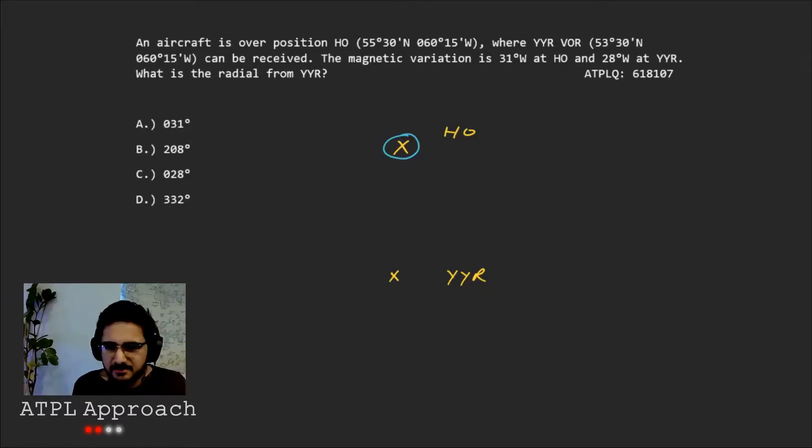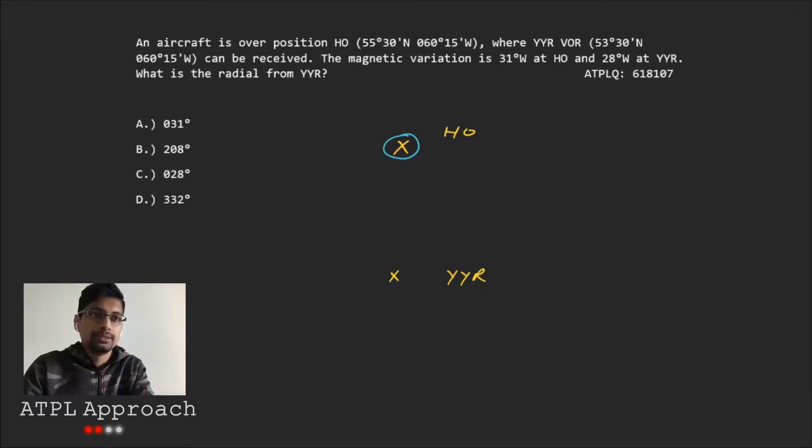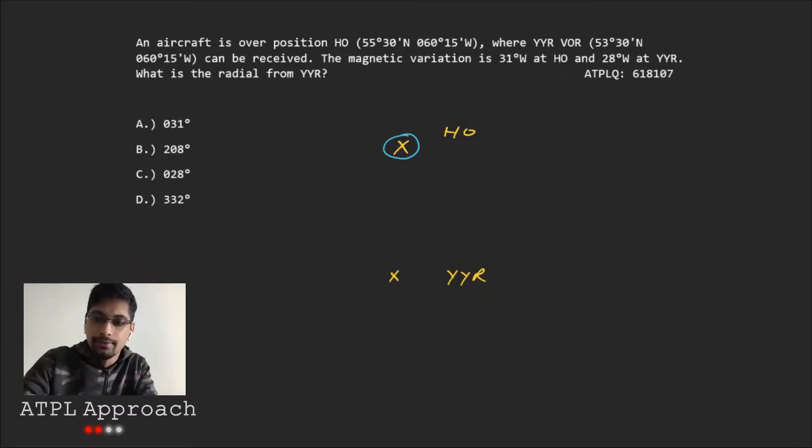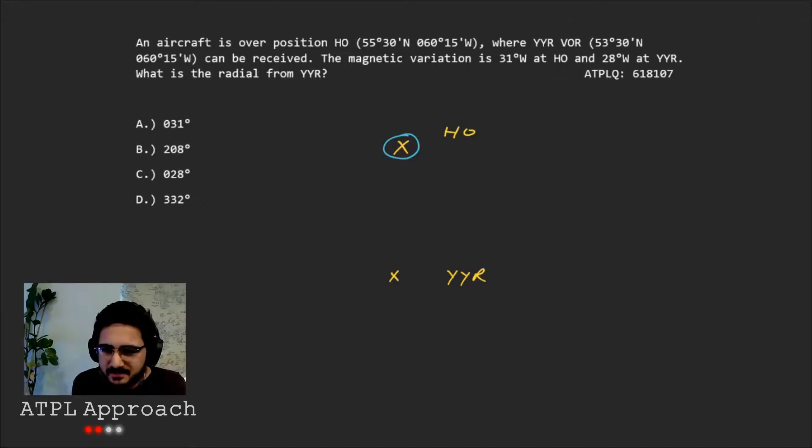Right. So then what sort of method do you use to convert? So if it's west, it's magnetic best. So I add it to the... Yeah. You use that saying? The way I do it is using this thing. Have you seen CDMVT before? I have, yeah. Yeah.